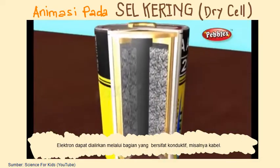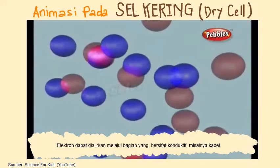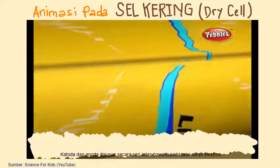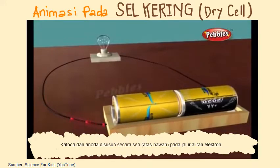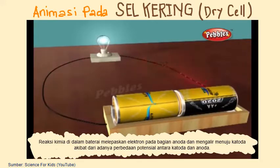Electricity is the flow of electrons through a circuit or a conductive path like a wire. The cathode and anode are hooked up to an electrical circuit. The chemical reaction in the battery causes a buildup of electrons at the anode, which results in an electrical difference between the anode and the cathode.